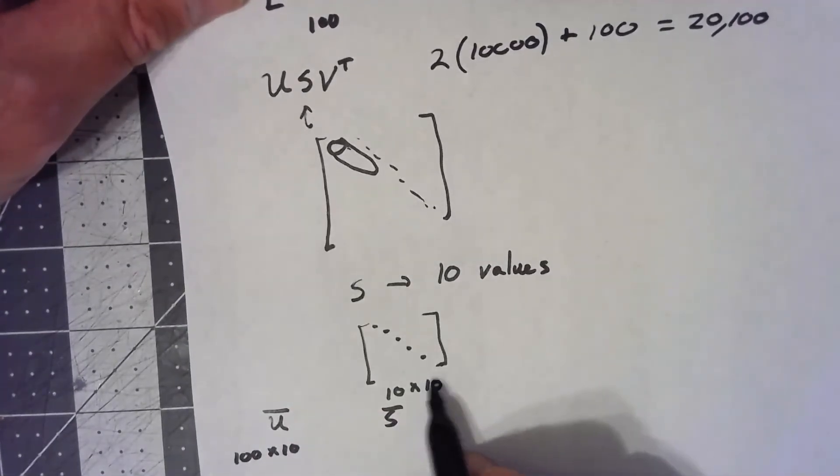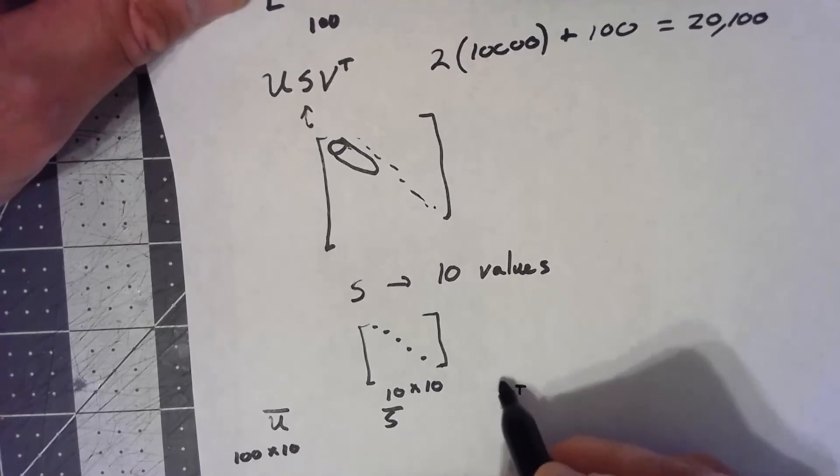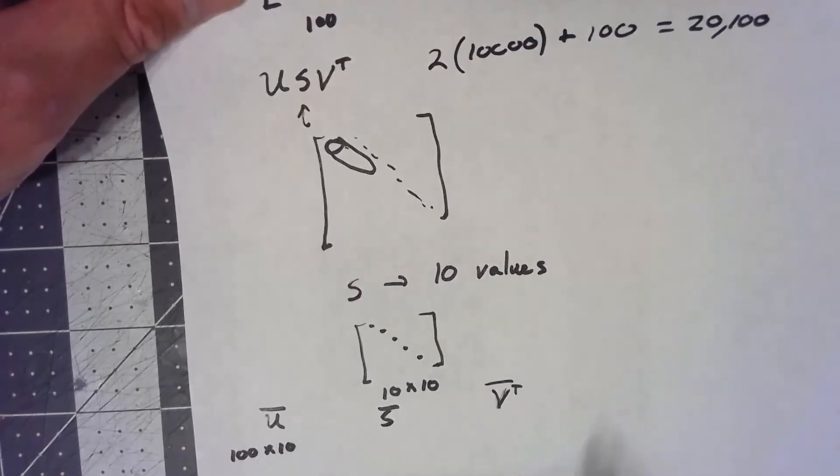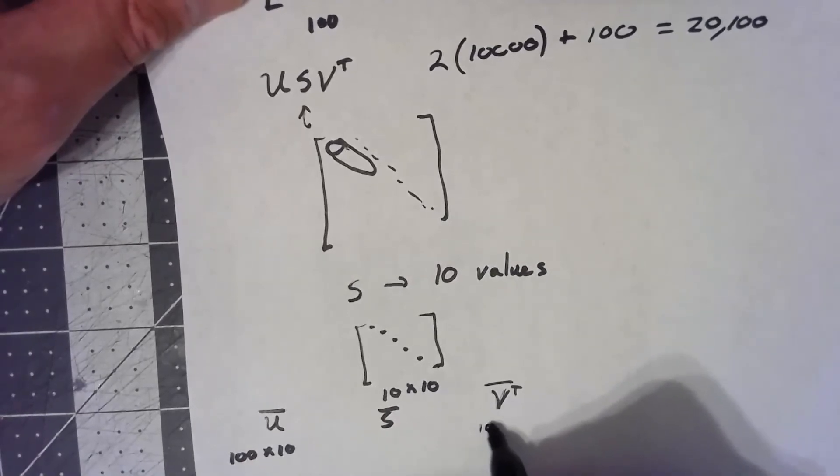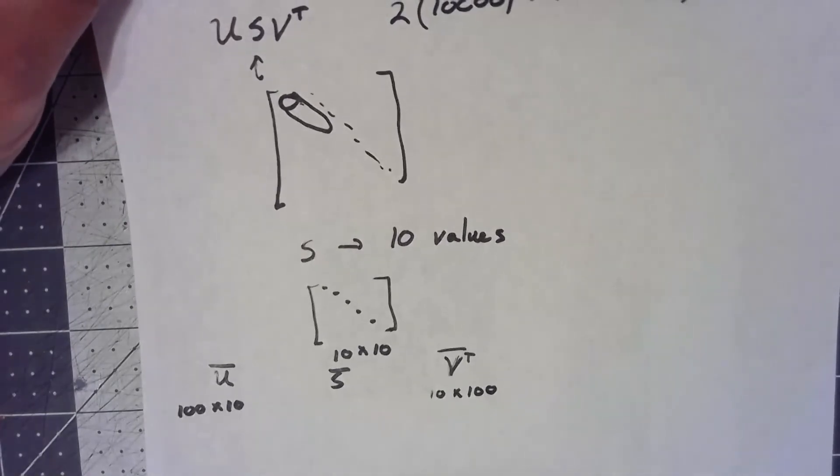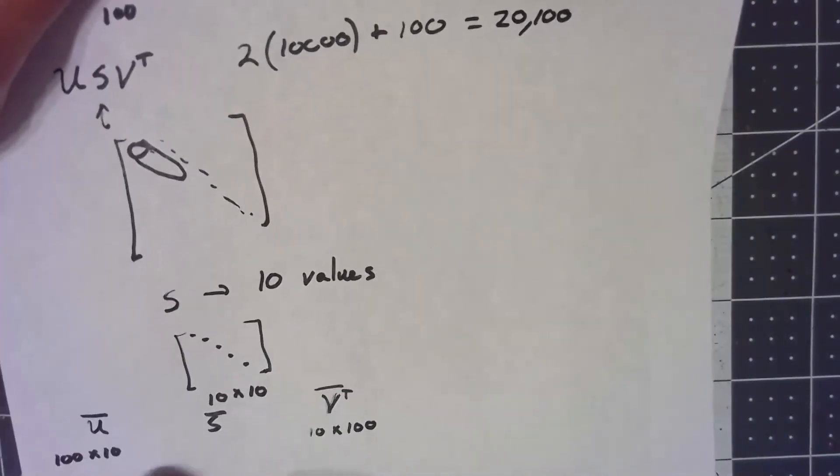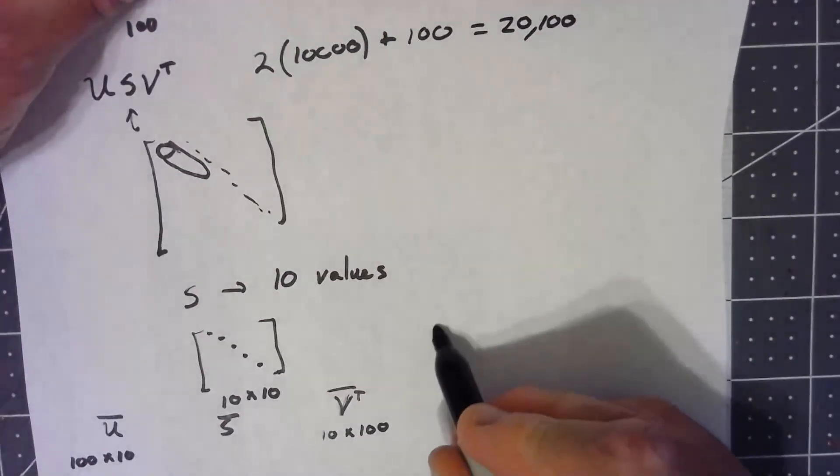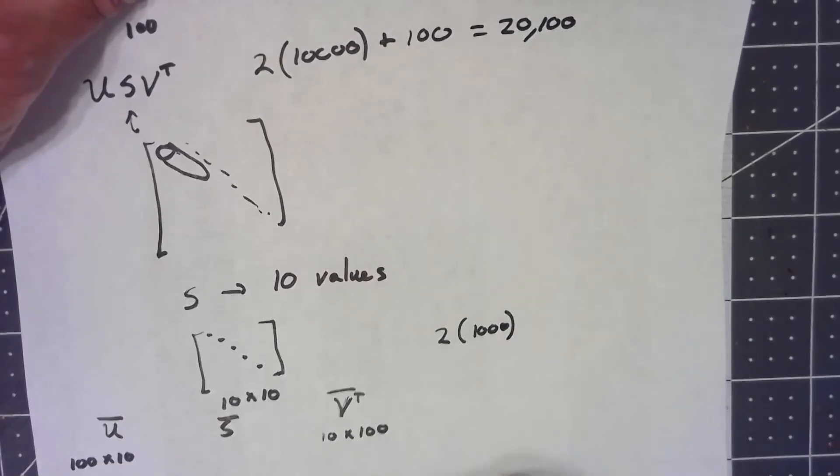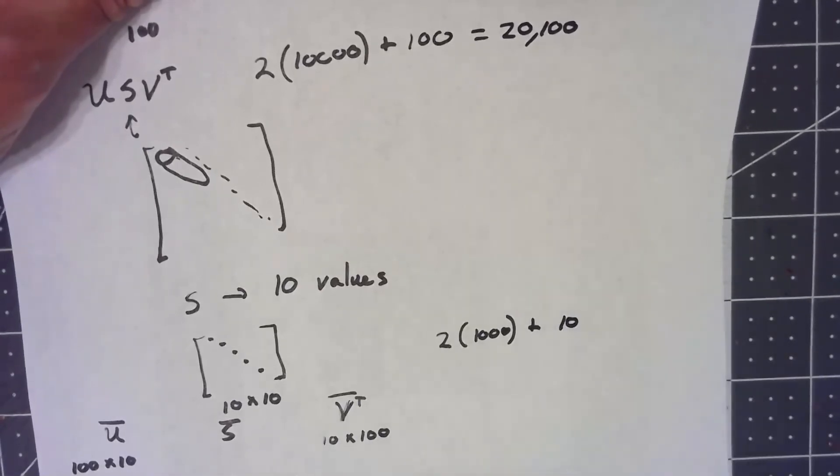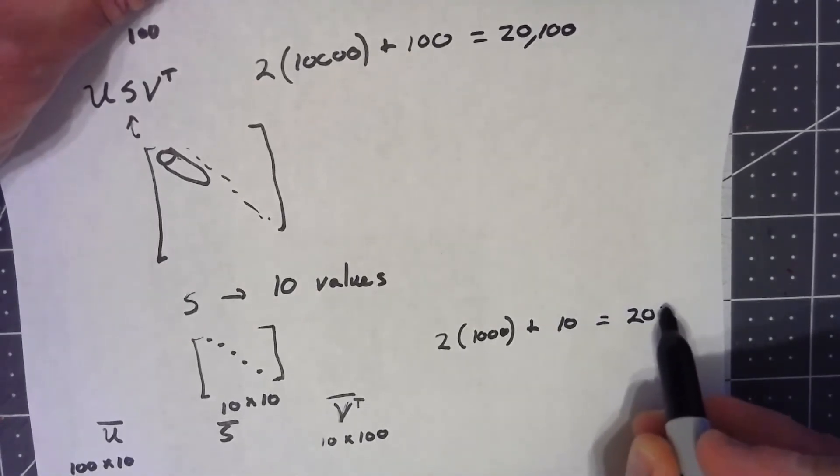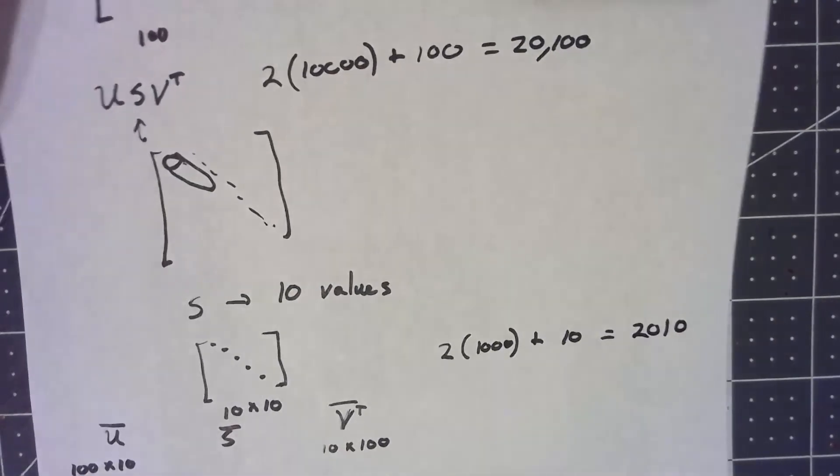Similarly, the V transpose will take the first 10 rows. We're going to take a 10 by 100 matrix. So all of a sudden, what we have is we have two 1,000 entry things, plus the 10 entries, meaning we've got 2,010 entries we need to store.